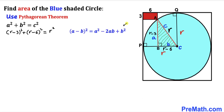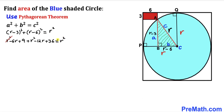Now let's expand using the identity (a − b)² = a² − 2ab + b². The left-hand side becomes r² − 6r + 9 + r² − 12r + 36 = r². One r² cancels with the right-hand side, and combining like terms gives r² − 18r + 45 = 0.